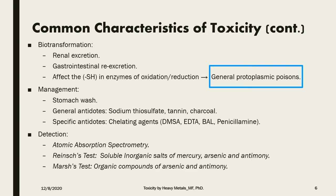When it comes to detecting heavy metal toxicity, we depend on atomic absorption spectrophotometry. One of the historical tests used to diagnose cases of heavy metal toxicity is the Reinsch test, specifically for soluble inorganic salts of mercury, arsenic, and antimony. Also, Marsh's test is for detection of organic compounds of arsenic and antimony.